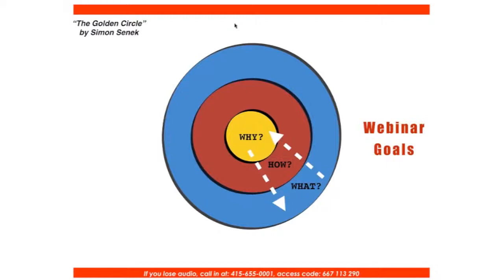So our goals — why are we really here? If you've heard of it, it's the Golden Circle by Simon Sinek: the what, the how, and the why. The use of small-sided games has given my program the biggest bang for the buck in terms of maximizing participation, inclusion, skill development, and assessment opportunities, while keeping the learning environment enjoyable.